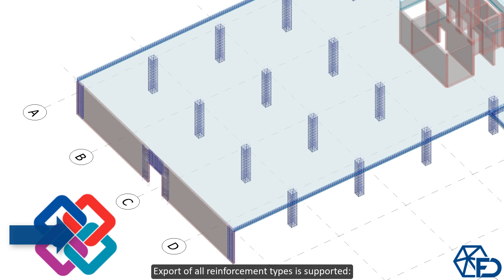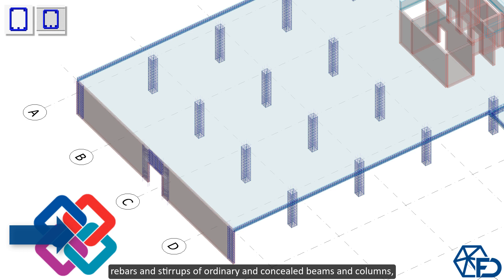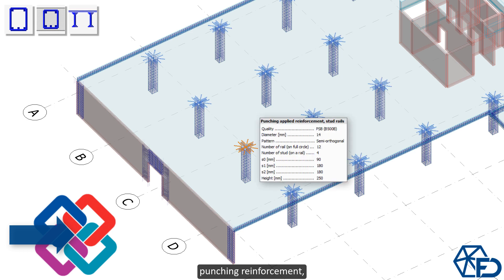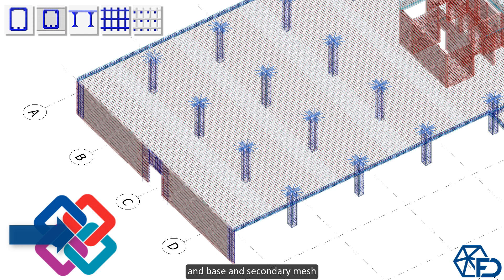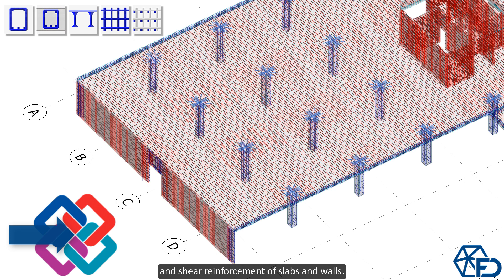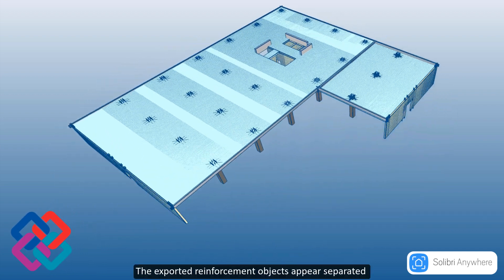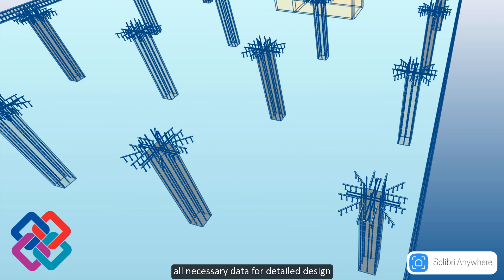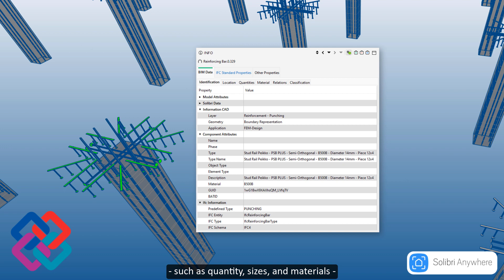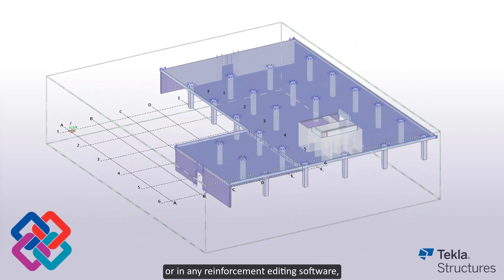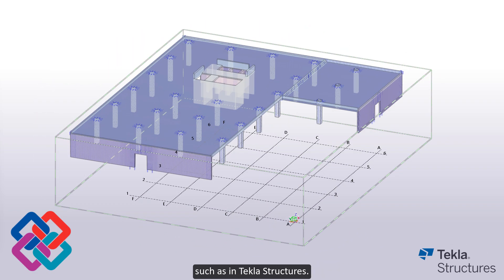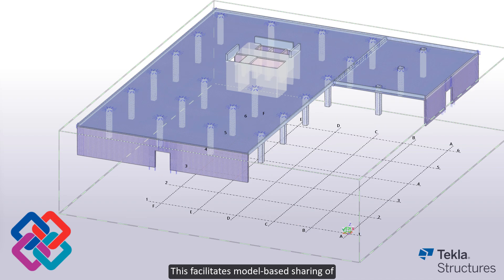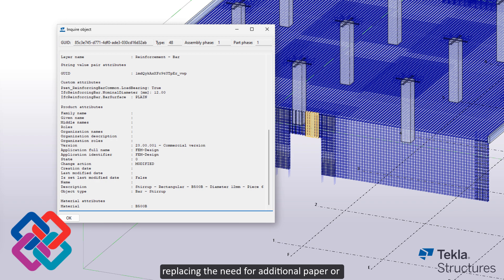Export of all reinforcement types is supported: rebars and stirrups of ordinary and concealed beams and columns, punching reinforcement, and base and secondary mesh and shear reinforcement for slabs and walls. The exported reinforcement objects appear separated into layers by type, with perfect geometry and all necessary data for detailed design — such as quantity, sizes, and materials — in any IFC viewer or reinforcement editing software, such as Tekla Structures. This facilitates model-based sharing of result data associated with elements, replacing the need for additional paper or PDF-based documentation.